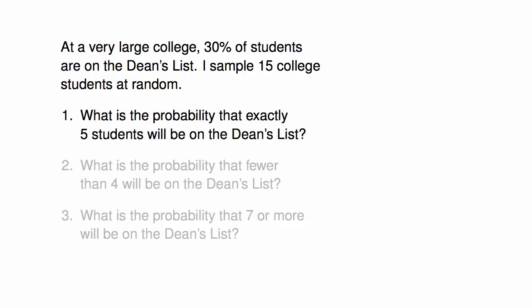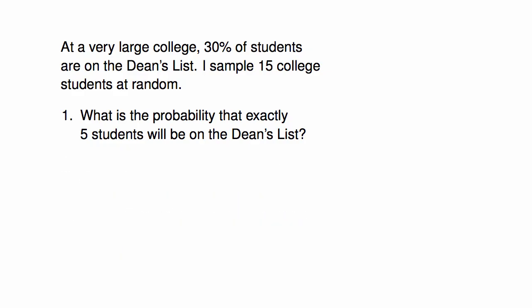What is the probability that exactly 5 of these students will be on the Dean's List? This first problem requires the binomial formula, since I want to know the probability that exactly 5 of the 15 students will be on the Dean's List.